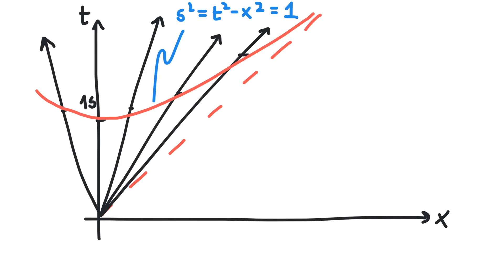Now for any frame with different spacetime axes, we simply draw the hyperbola to know where their one second mark is located.